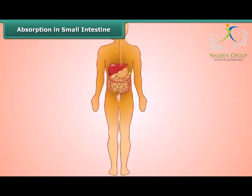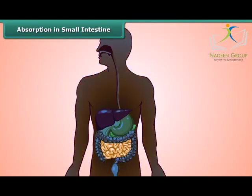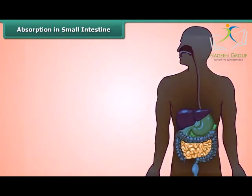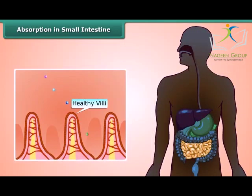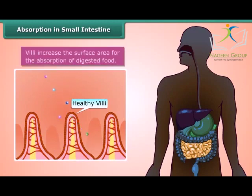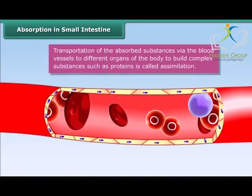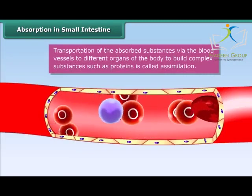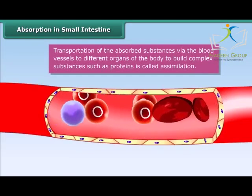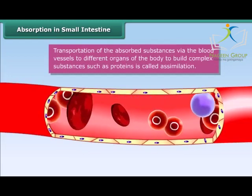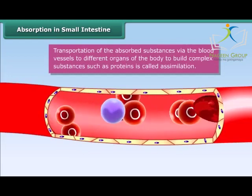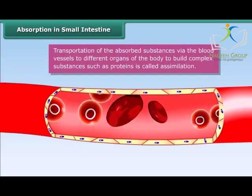There are tiny finger-like structures called villi lining the inside of the small intestine. Villi increase the surface area for the absorption of digested food. The absorbed substances are then transported via blood vessels to different organs of the body, where they are used to build complex substances such as proteins. This process is called assimilation.